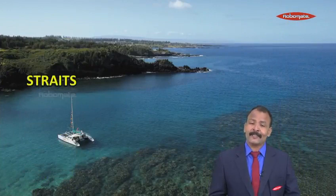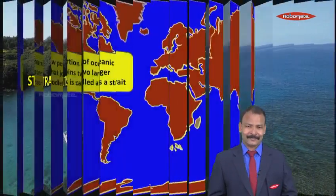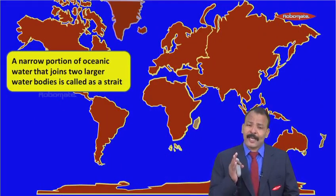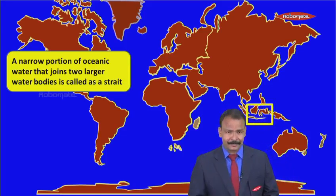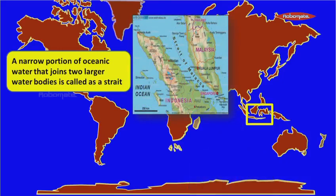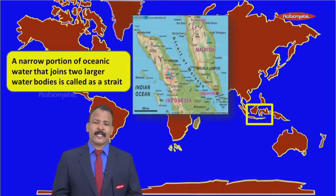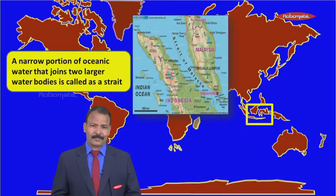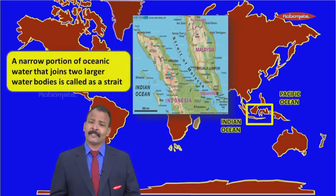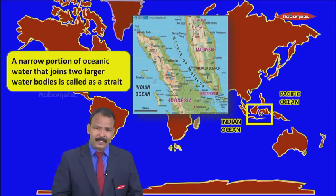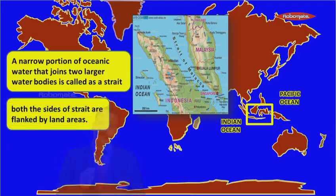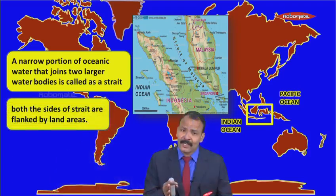The next water body is a strait. A strait is a narrow portion of oceanic water that joins two larger water bodies. For example, there is a strait that joins the Pacific Ocean and the Indian Ocean, flanked on both sides by land — the countries of Malaysia and Indonesia.